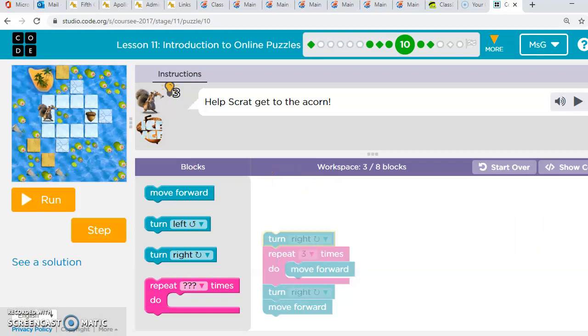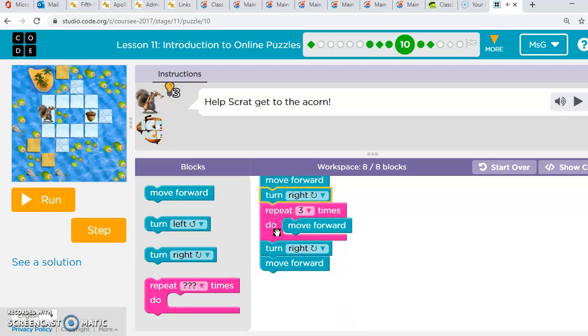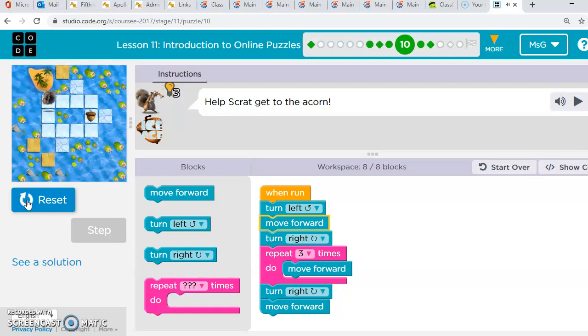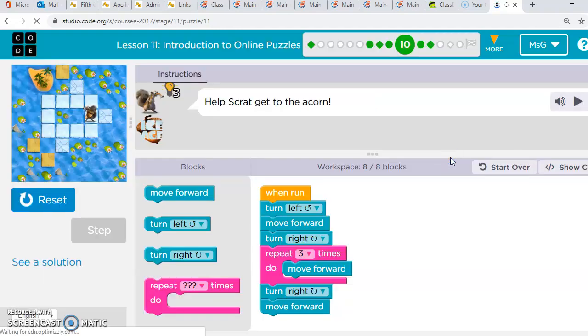Option B has him starting with a turn left, move forward, turn right, move forward three times, turn right, move forward. Let's try this one. Much better! So the answer for puzzle two is B.